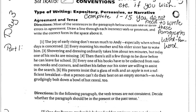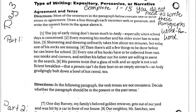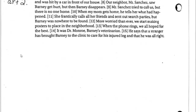The worksheet says to draw a line through each incorrect verb or pronoun and write the correct form above it. You don't necessarily need to do exactly that — as long as you can mark on the page that you understand what's agreeing and what's not, you've met the standard. For example: the joy of early rising don't mean much to Andy — that's a number disagreement; it should be doesn't. So for number one, you'd write don't becomes doesn't.